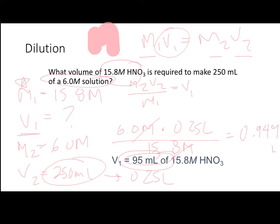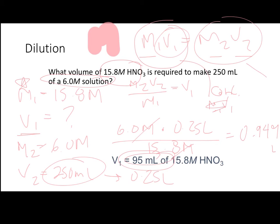When approaching these problems, make sure you are matching up the units with the appropriate variables and stay consistent. Typically M1 and V1 represent the more concentrated solution and M2 and V2 represent the dilute solution. If you choose a different assignment, that's okay — just make sure you're being consistent with which side you choose.